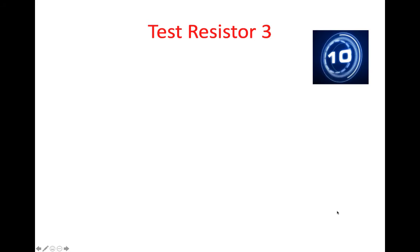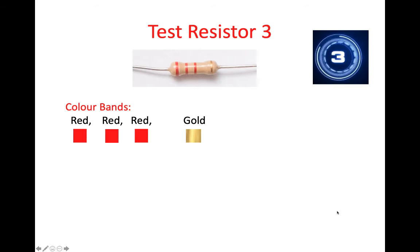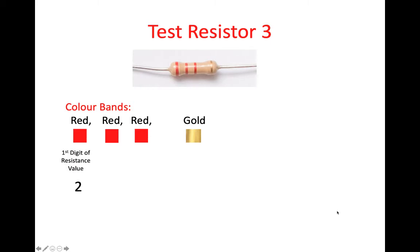Test resistor number three. Here we have red, red, red, and gold. In this example, red represents the value 2. So the first digit of the resistance value is 2, the second digit of the resistance value is 2, and the multiplier value is 2. Again, gold is plus or minus 5%.